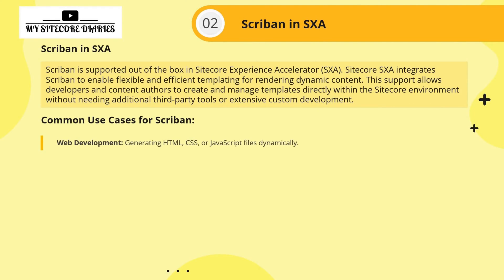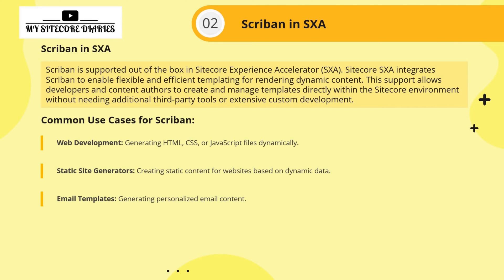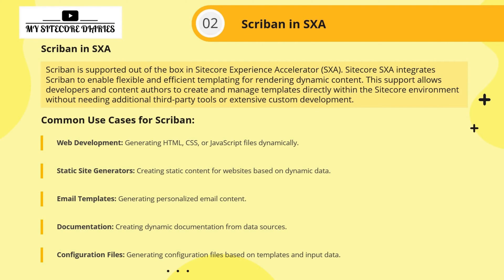Common use cases for Scriban include: web development, where you want to generate HTML, CSS, or JavaScript dynamically; static site generators — creating static content for websites based on dynamic data; email templates, which is very useful since emails have dynamic content like the recipient's name and personalized data; documentation — creating dynamic documentation from data sources; and configuration files — generating configuration files based on templates and input data.